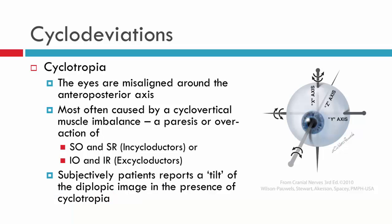When a cyclovertical muscle is palsied, what it can cause is a cyclotropia, and this will be the eyes misaligned around the anterior-posterior axis. From the patient's perspective subjectively, they will report that the diplopic image is tilted. It's important that you elicit the information around tilt because often the patients won't report the tilt. They may indicate that they have double vision, but you need to specifically ask if the diplopic image is tilted to determine if there is torsion.